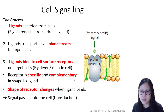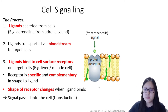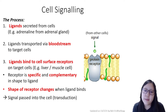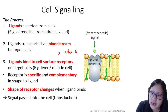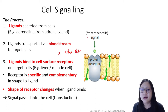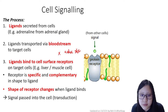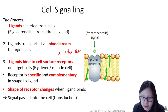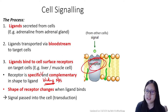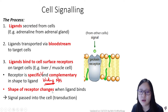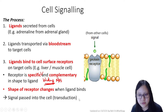The words 'specific' and 'complementary' are very important here. A common mistake is to say the ligand binds to an 'active site' — that is not correct, because this is not an enzyme. You should say: ligands bind to cell surface receptors on the target cells, and these cell surface receptors have specific binding sites complementary in shape to the ligand. It is a receptor, not an enzyme.